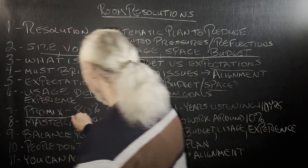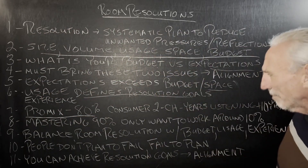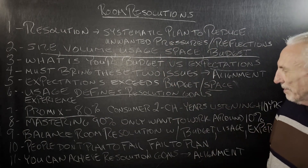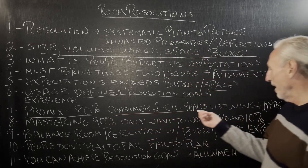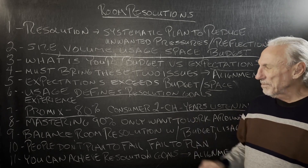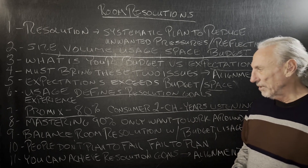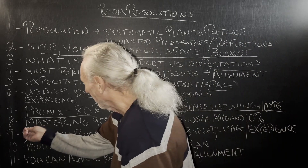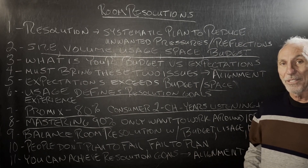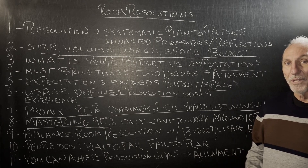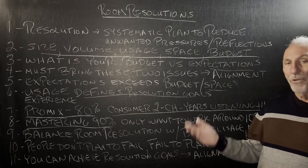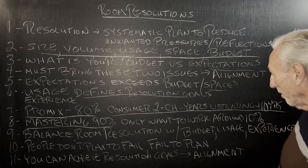We have three resolutions. ProMix is about 80% — that's what a mix engineer wants. Consumer two-channel with 10-plus years of listening experience, 80–90% is a good mark to shoot for. Mastering wants 90% resolution — they only want to work around 10% of the issues. That's the final process in the musical chain; you don't want to fight the room at the end. Fight it in the beginning, in the mix and the recording, but when you're mastering, get as much out of the way as you can.